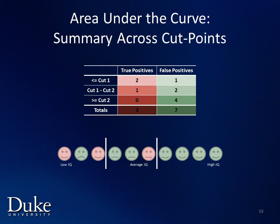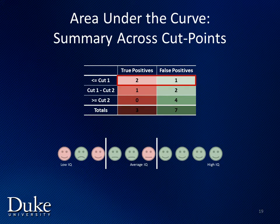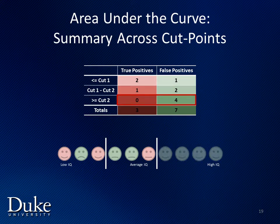Now we're going to move on to defining the area under the curve, which is a way to describe the classification ability across cut points. The table we're working from is arranged a bit differently — it shows the number of true positives and false positives broken down by the cut points we're considering. Of the individuals who score less than the first cut point, we have two true positives and one false positive. Of the individuals who score between the first and second cut point, we have one true positive and two false positives. And if the cut point were moved to the maximum IQ, all individuals who scored above the second cut point would also be false positives.